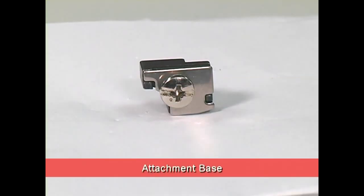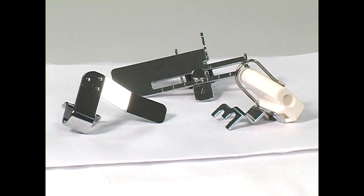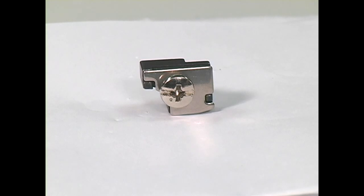The attachment base is used with some Bernina serger models to attach accessories that mount on the right-hand side of the serger. Use the attachment base to secure the right-hand seam guide, the guide for the multi-purpose foot, or the gathering attachment. Once secured to the serger, the attachment base may be left in place and will not interfere with normal serging.